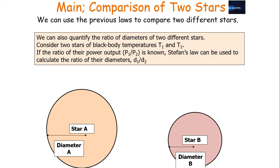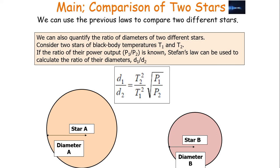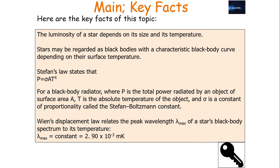We can also quantify the ratio of the diameters of two different stars. If we consider two stars with black body temperatures T1 and T2, and if the ratio of their power outputs P1/P2 is known, then Stefan's law can be used to calculate the ratio of diameters D1 and D2. The formula is: D1/D2 = (T2²/T1²) × √(P1/P2). You can then use that to find how much bigger certain stars are compared to others.